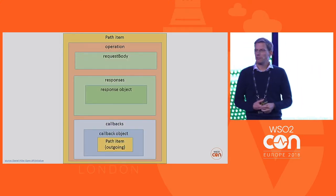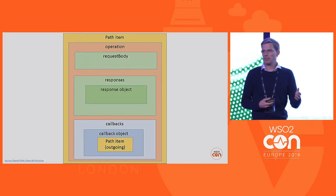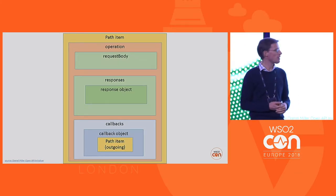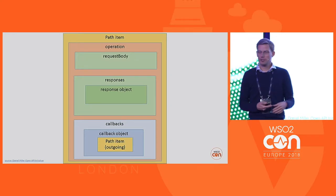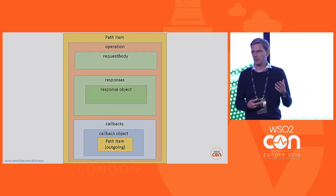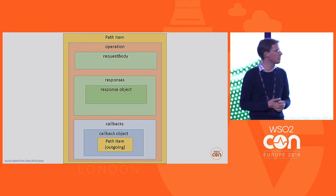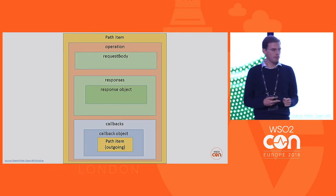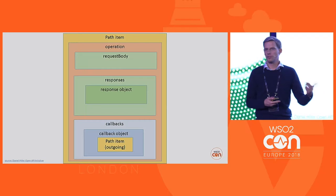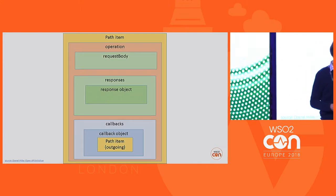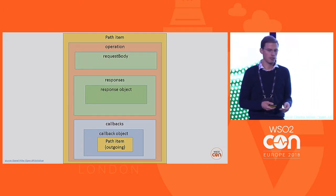Here are the callbacks. In the past, there was always request-response — a synchronous call where you call the API and get a response. That was the definition in Swagger 2.0. With the new version 3, you can specify a callback, which is a publish-subscribe operation, as used for webhooks, for example. So you call the API and then there's a callback later on to handle it asynchronously.